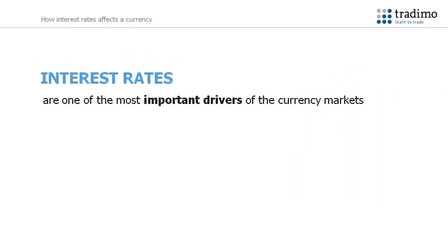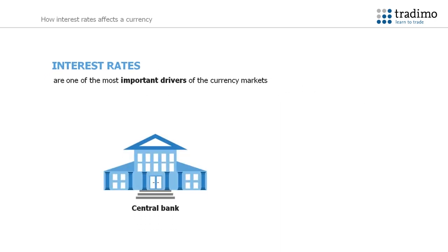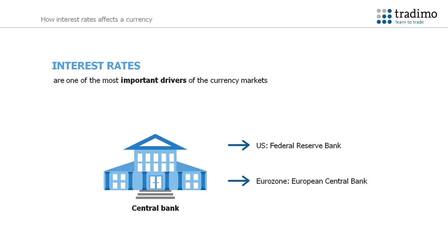Interest rates are one of the most important drivers of the currency markets. They are normally set by a country's central bank. For the United States, interest rates are set by the Federal Reserve Bank. And for the Eurozone, the European Central Bank is responsible for setting the interest rates.